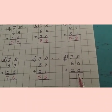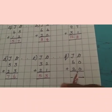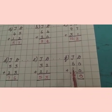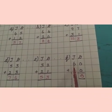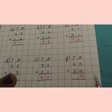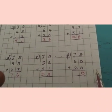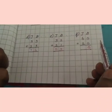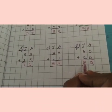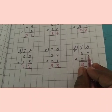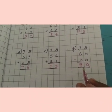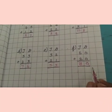Next: 60 plus 20. First, add the ones place — zero plus zero is zero. Next, tens place: six plus two — six in the mind, two in the finger — after six: seven, eight. Answer is eight. 60 plus 20 is equal to 80.